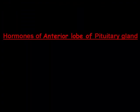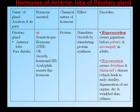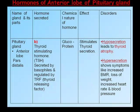Hormones of the anterior lobe — pars distalis: Somatotrophic hormone (STH) or growth hormone is secreted by acidophils; it is a protein in chemical nature. It stimulates growth by stimulating protein synthesis. Disorders: hypersecretion causes gigantism before puberty and acromegaly in adults; hyposecretion causes dwarfism and Simmond's disease, leading to early sterility, degeneration of sex organs, dry wrinkled skin, and premature aging.